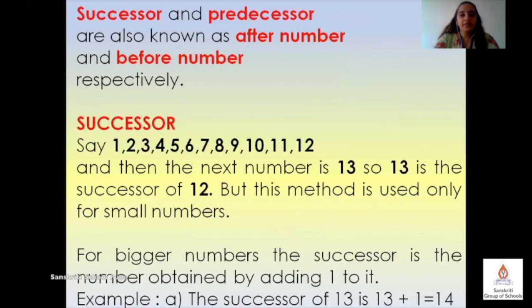Successor and predecessor are also known as after number and before number respectively. Successor is the number that comes after the given number. Now here we can see that numbers 1 to 12 are written in sequence. Since 2 comes after 1, so 2 is the successor of number 1 and 3 is the successor of number 2 and so on.